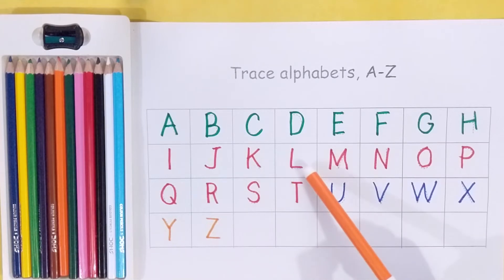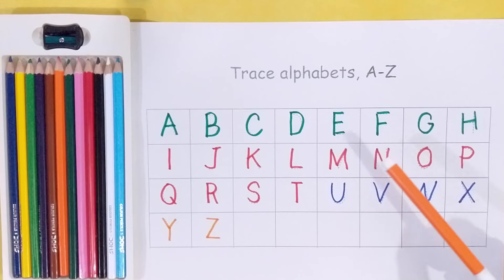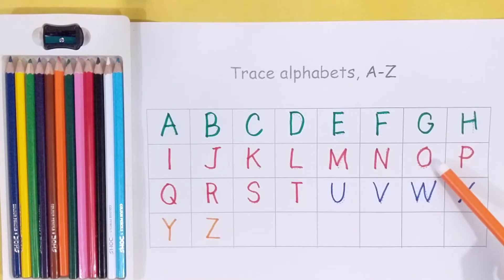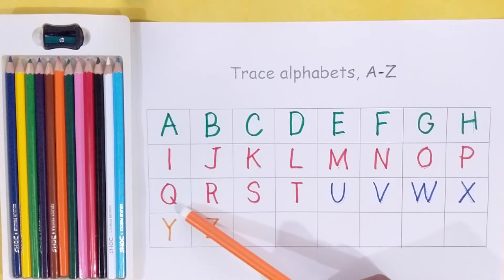K is for Kite. L is for Lemon. M is for Mango. N is for Nest. O is for Orange. P is for Python. Q is for Queen. R is for Red.